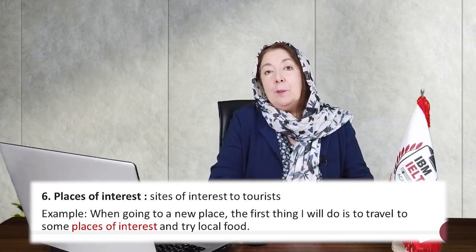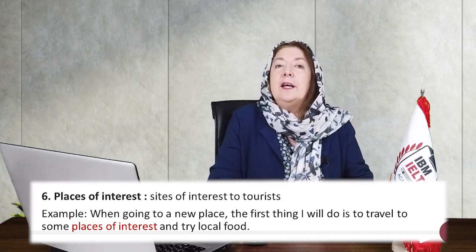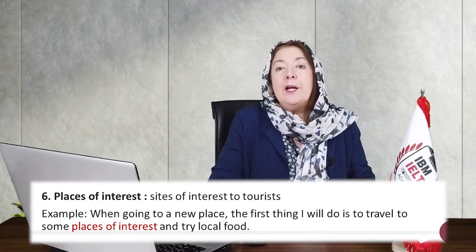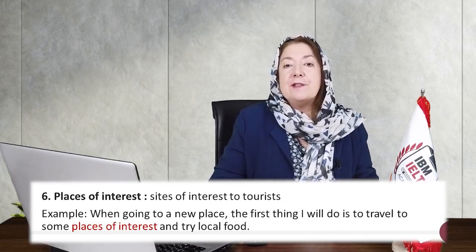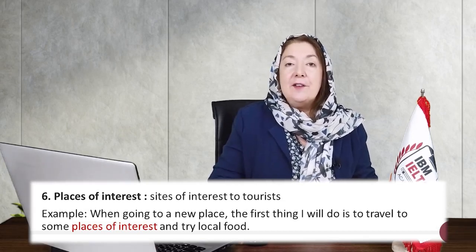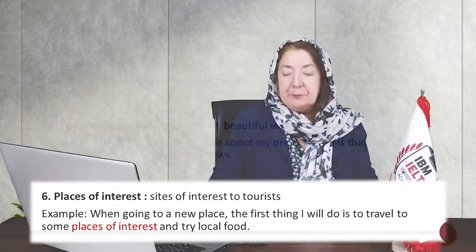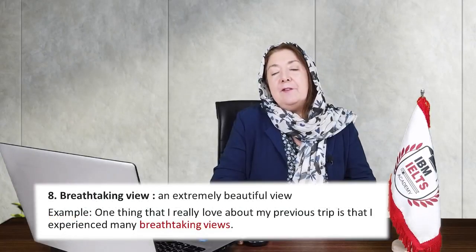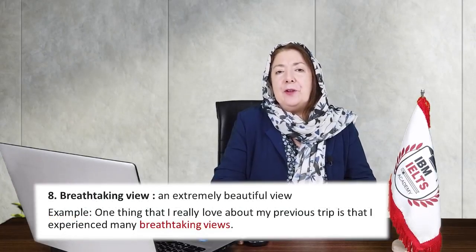Number six: places of interest — sites of interest for tourists, which can be historical or modern. For example, Dubai is all modern but unusual and exceptional. Old places like the Forbidden City in China or the Great Wall of China are also places of interest. When going somewhere new, the first thing I do is visit places of interest and try the local food.